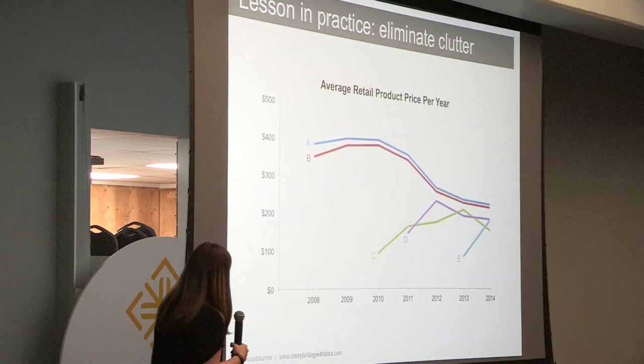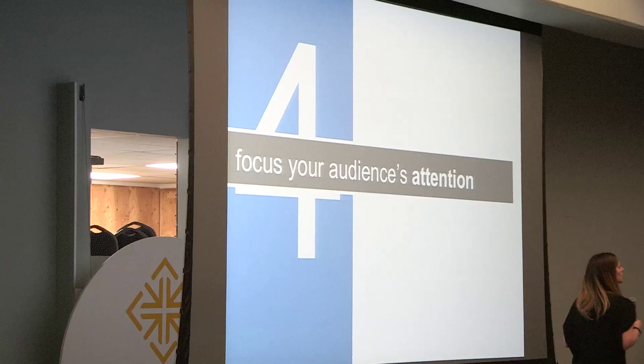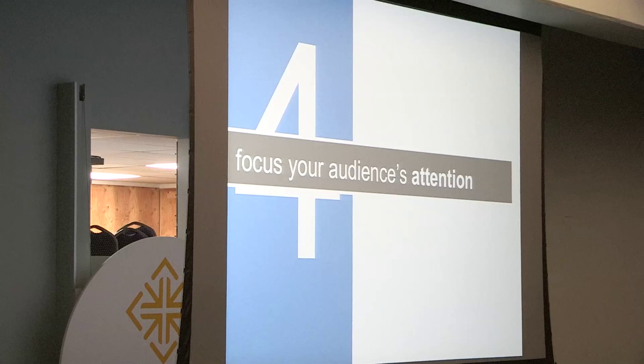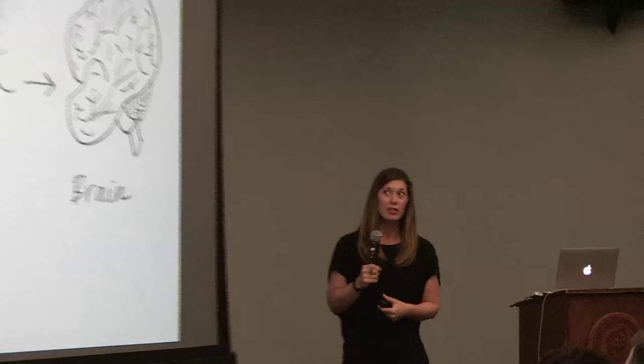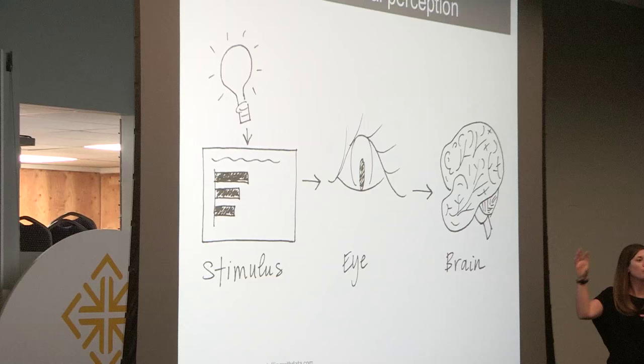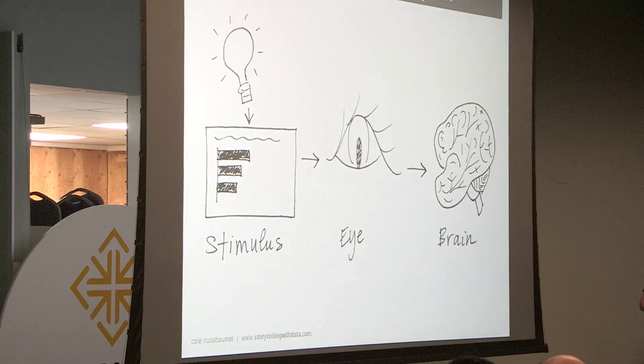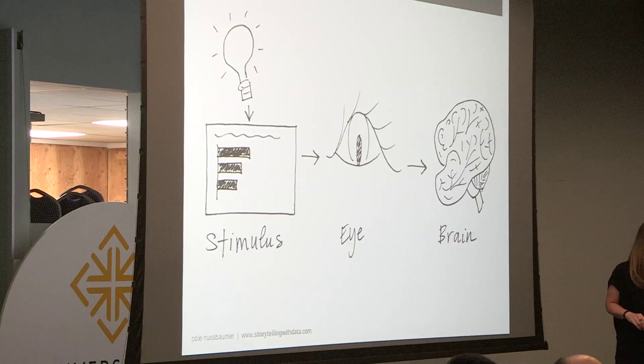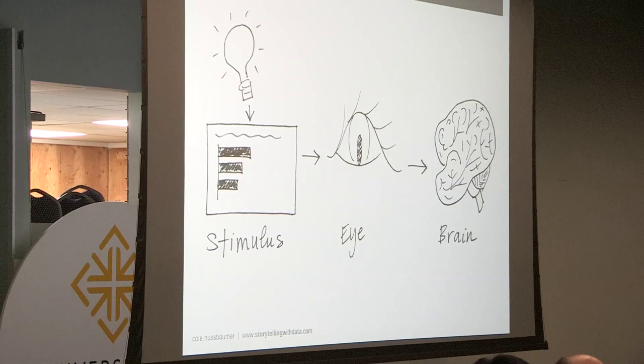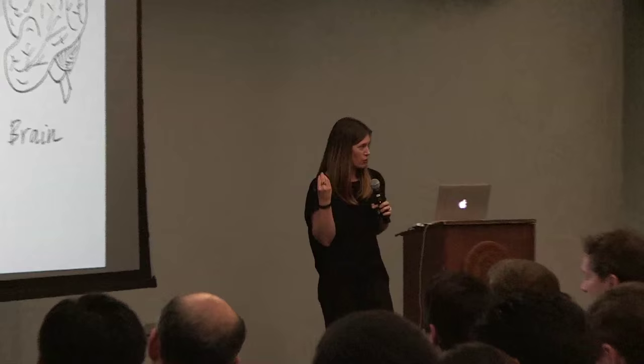We're not done yet, but we are ready for lesson number four, which is about focusing attention. I'm going to start by talking about how people see. On the left-hand side, we have light refracting off the stimulus, captured by our eyes. Mostly it's what happens in our brain that we think of as visual perception. In the brain there are a couple of types of memory important to understand as we're designing visuals — tonight we'll talk about iconic memory. Iconic memory is super short-term, shorter than short-term memory. The information stays there for fractions of a second before it gets forwarded on to short-term memory.